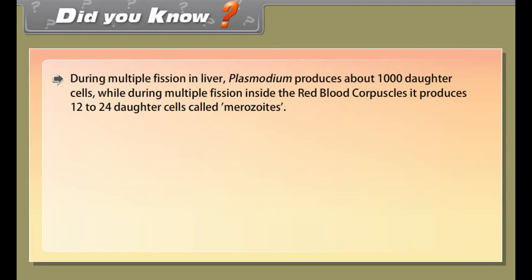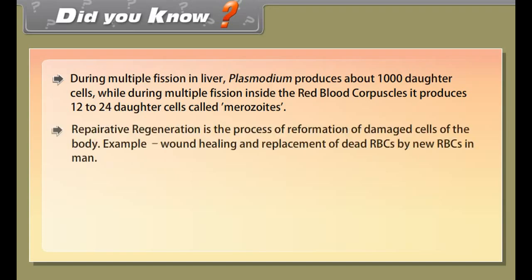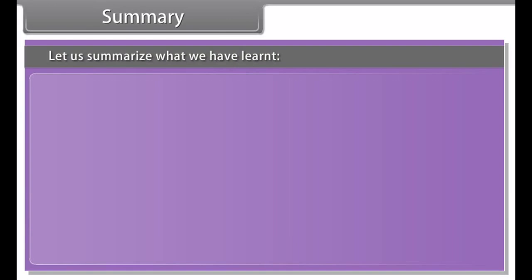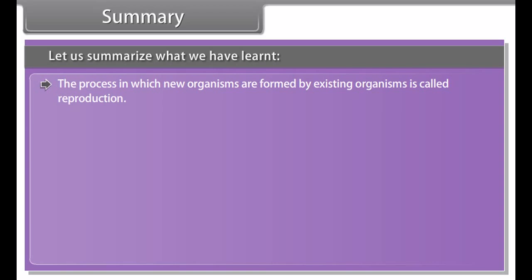Tissue culture is the production or propagation of new plants from isolated plant cells or small pieces of plant tissue in a synthetic medium or culture solution. Plants are grown by removing tissues or separating cells from the growing tip of the plant and putting them in an artificial medium. The plant tissue divides to form a small group of cells called callus. The callus is transferred to another medium containing hormones for growth and differentiation, forming plantlets. The plantlets produced are transplanted into pots or soil where they grow into mature plants.